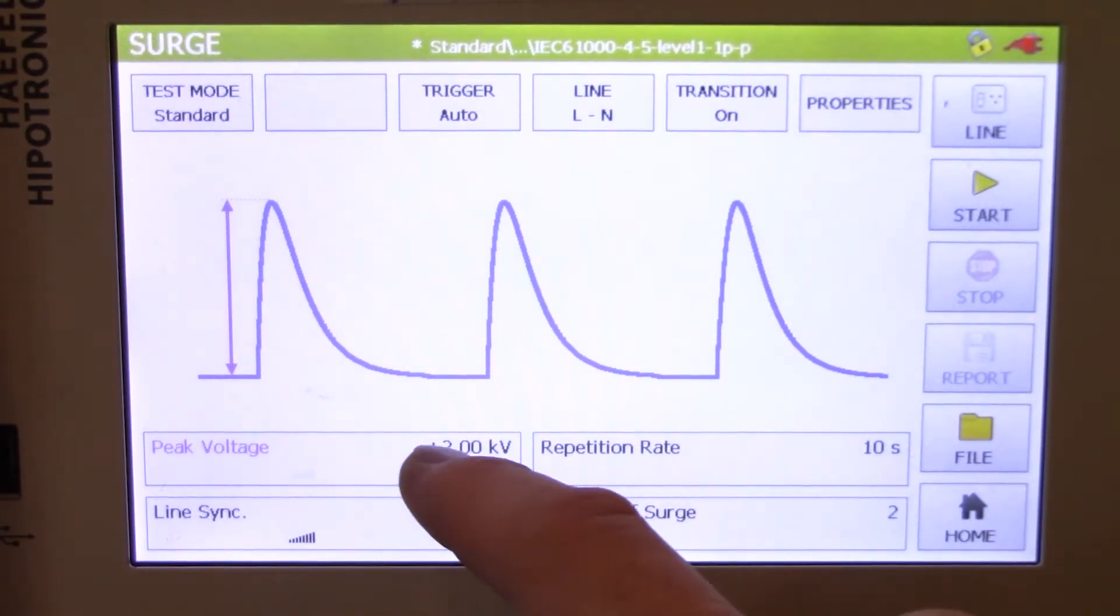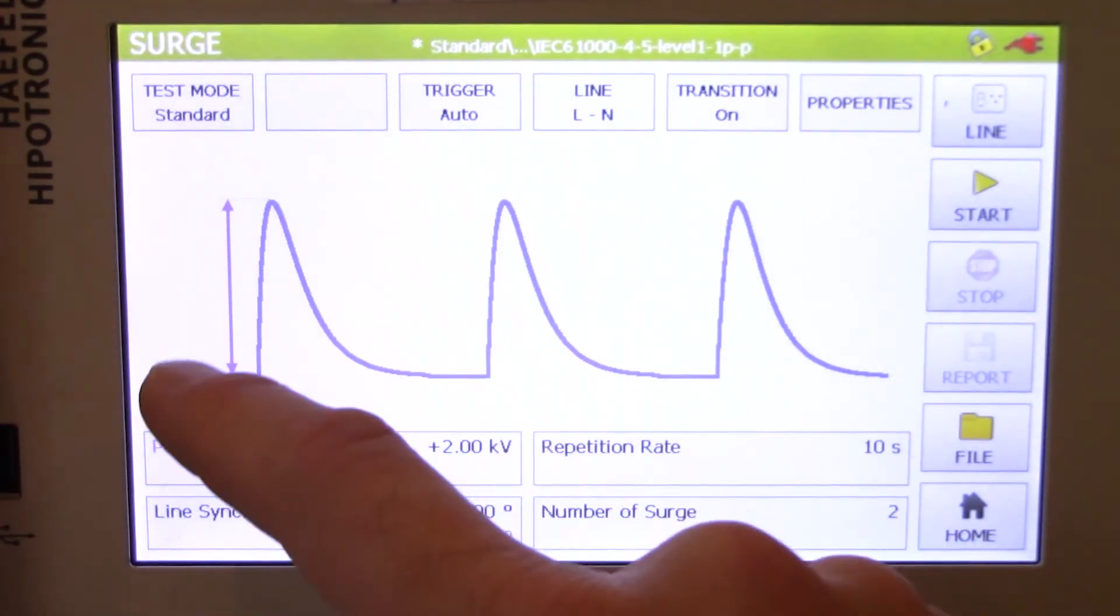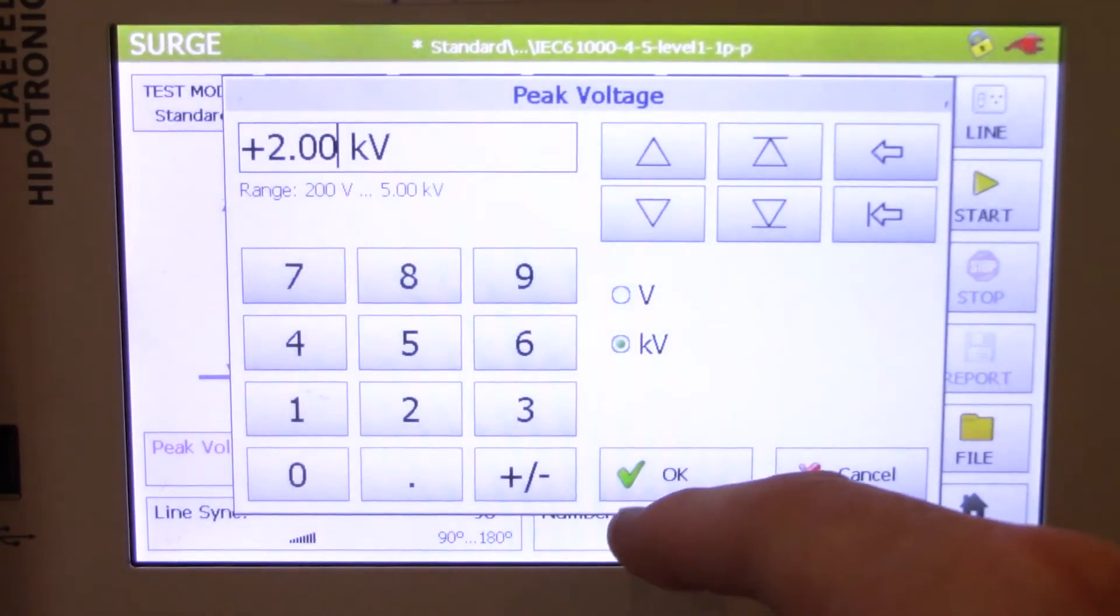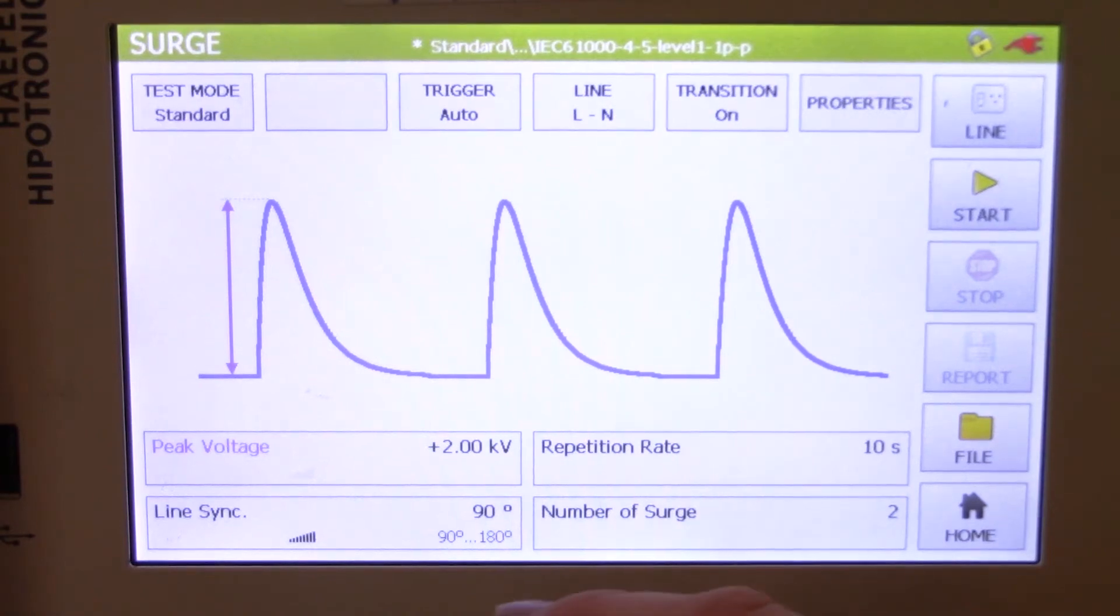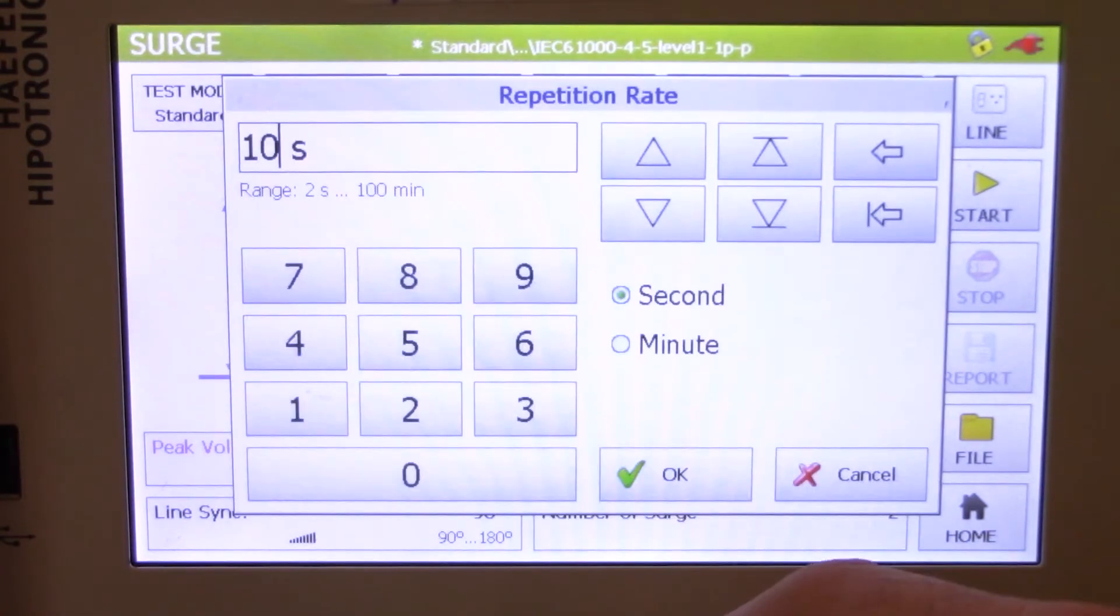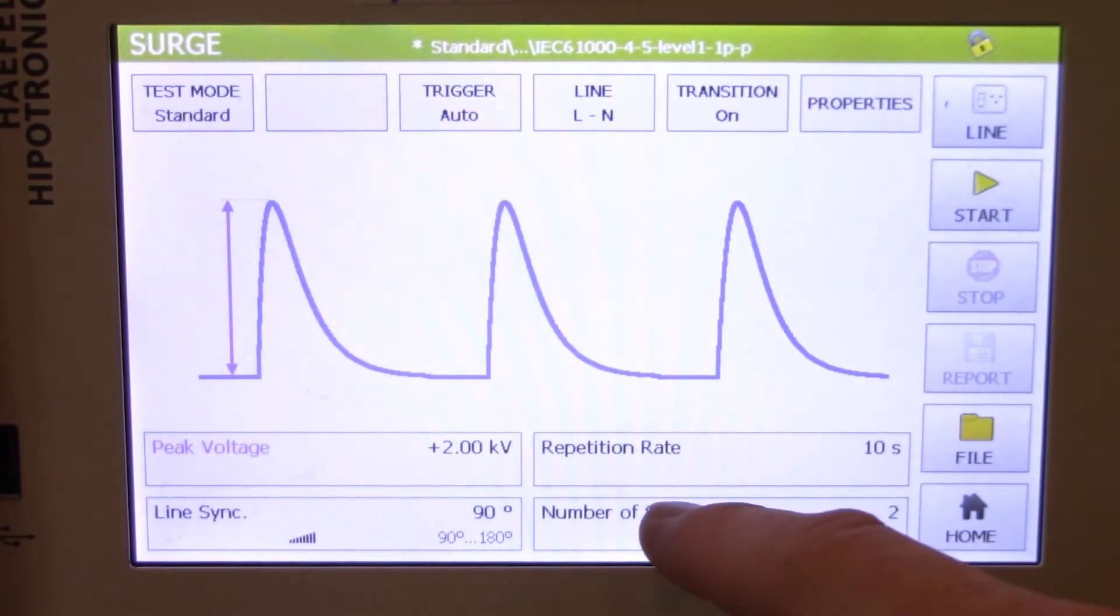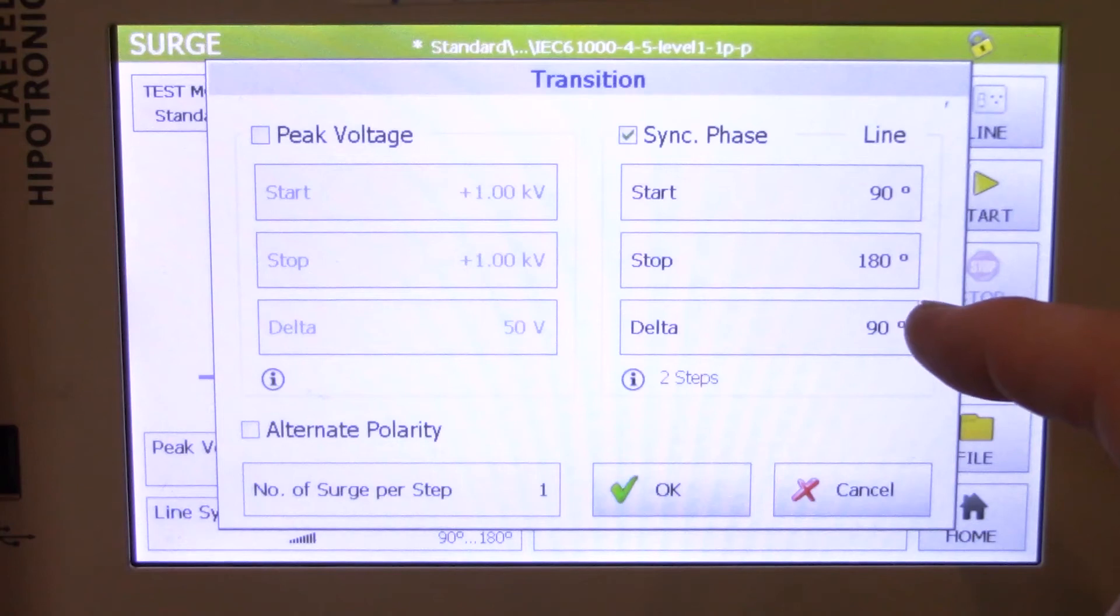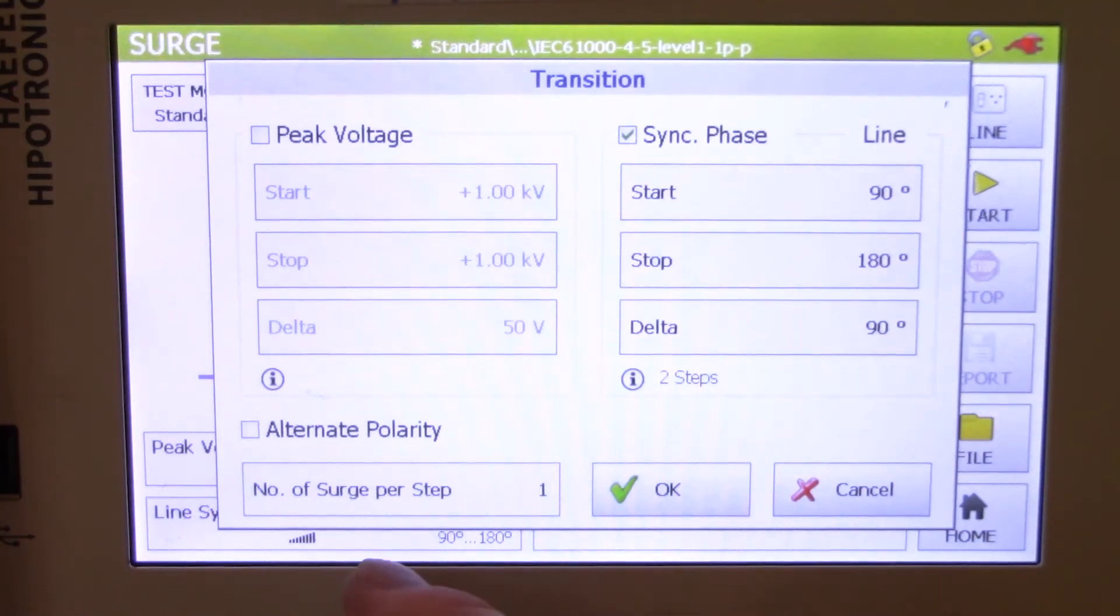One other thing you want to be aware of is your peak voltage. You'll see that indicated on the left side of the icon right there. You can adjust that. I think today we're happy with 2 kV. We'll go ahead and take a look at repetition rate, so we're just 10 seconds, number of surges. Click on that, you see the line synchronization right there, 90 to 180 degrees. Number of surges per step is one, so we're okay with that.